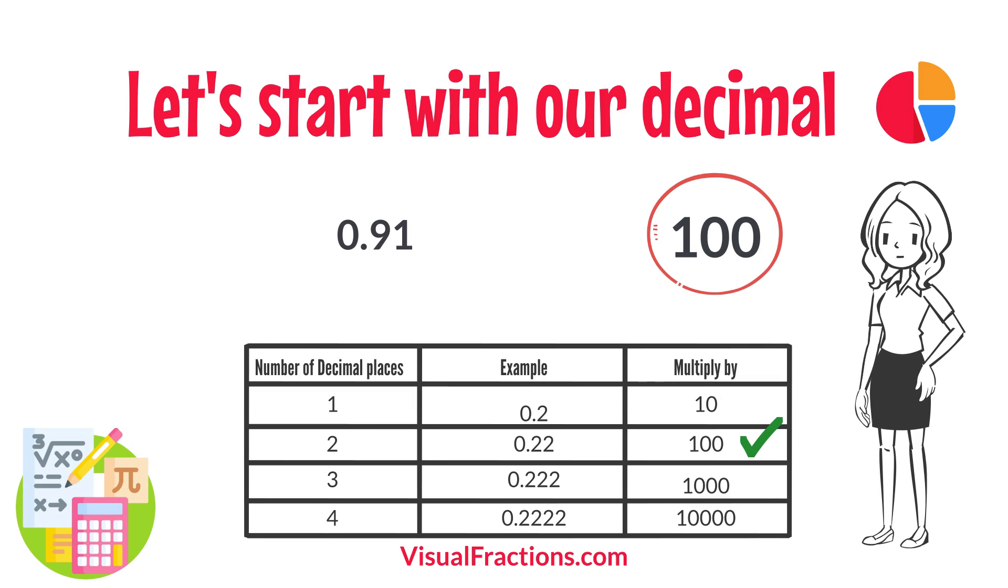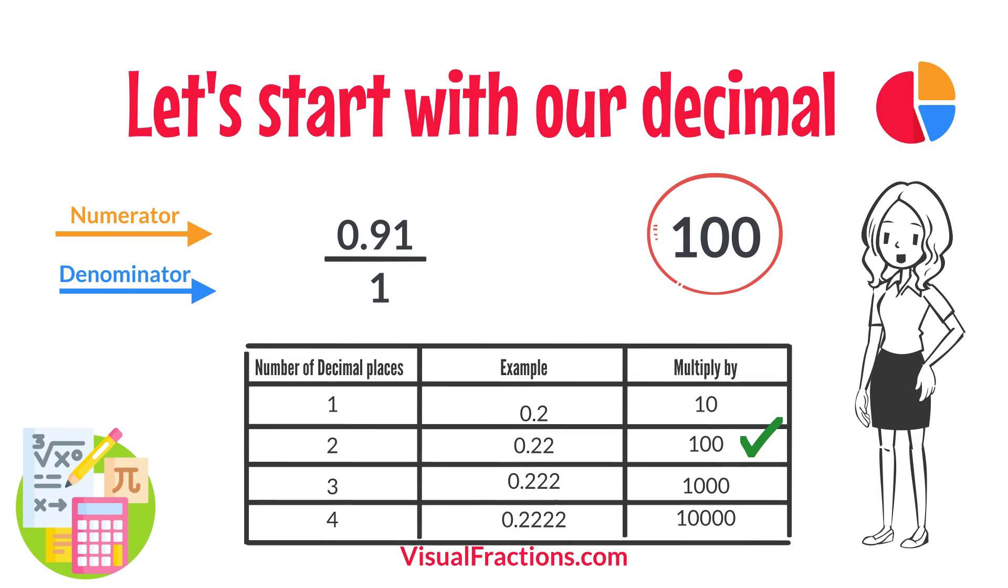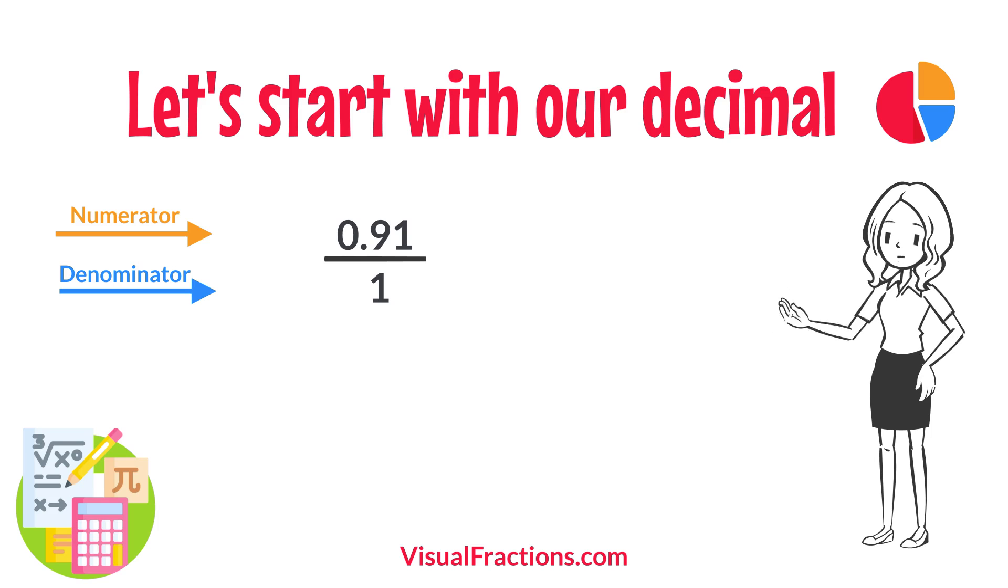To convert this decimal into a fraction, you initially put it over 1, essentially treating the decimal as the numerator in a fraction where the denominator is 1. This sets up the conversion process where we multiply both the numerator, the decimal, and the denominator, 1, by 100 because there are two decimal places.